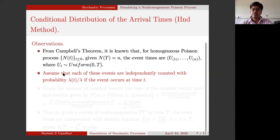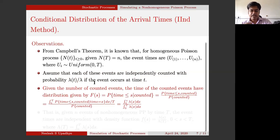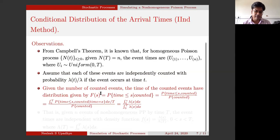Then I want to understand what is the conditional distribution of arrival times. The arrival time can also be seen as a waiting time — waiting time for an event to happen or waiting time for k events to happen. So now I want to understand how this waiting time can be derived. Given an underlying homogeneous Poisson process, some events have already happened, and I am looking at the non-homogeneous version of that Poisson process. Given the number of counted events which I already know, I need to know the time of those counted events. Eventually these times will be random variables, so I need to understand the distribution of that particular random variable, given by F(s).